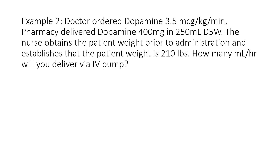Example 2 — this is my last example in this video. The doctor ordered dopamine 3.5 micrograms per kilogram per minute. Pharmacy delivered dopamine 400 milligrams in 250 milliliters D5W. The nurse obtains the patient weight prior to administration and establishes that the patient weight is 210 pounds. How many milliliters per hour will you deliver via IV pump? Since the problem wants milliliters per hour, we want to locate milliliters in the problem. We have it — there is 400 milligrams of dopamine in 250 mL D5W. When we set this up using dimensional analysis, I want 250 milliliters on top and 400 milligrams on the bottom.